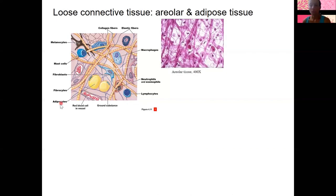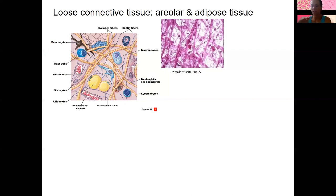Areolar tissue also contains adipocytes (fat cells), lymphocytes, macrophages, neutrophils — so white blood cells giving it immune capabilities — as well as mast cells. Melanocytes produce melanin to contribute to color. So it's fairly diverse. It's actually what's just below the epithelial tissue, connecting the epithelial to the underlying tissues. It's kind of like a very general glue, and it's fairly loose.